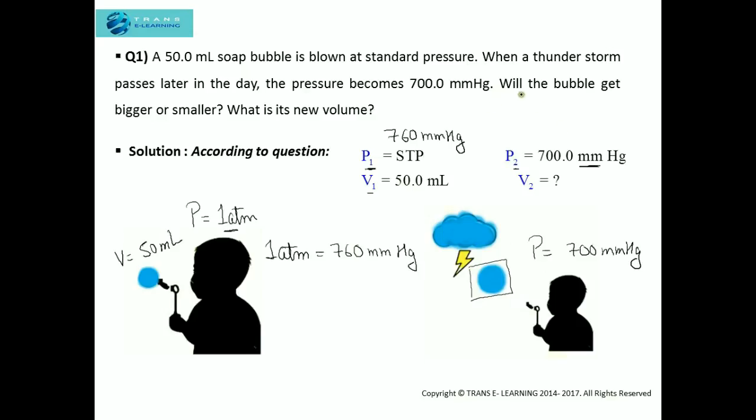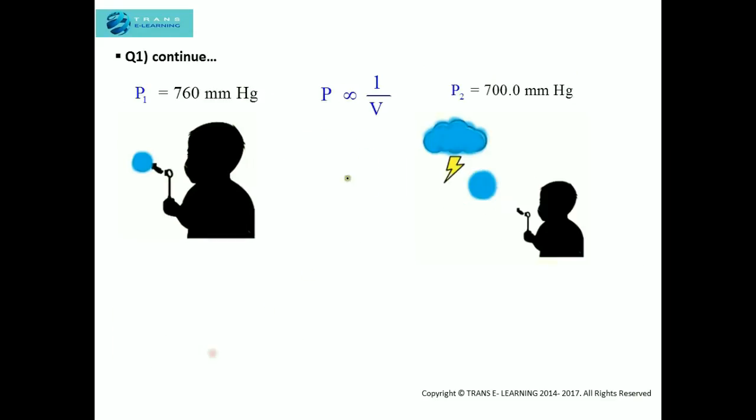You can see here we have two questions. For the first question, will the bubble get bigger or smaller? Let's find the answer for this and then we will find out the new volume. As per Boyle's Law, the pressure and the volume are inversely related with each other. That means pressure is inversely proportional to volume and vice versa.